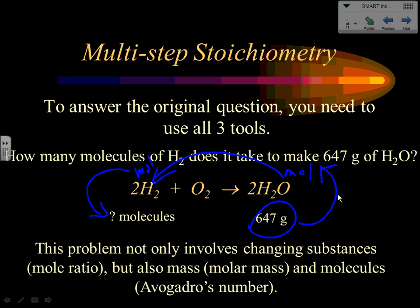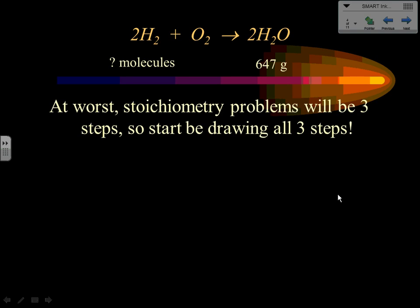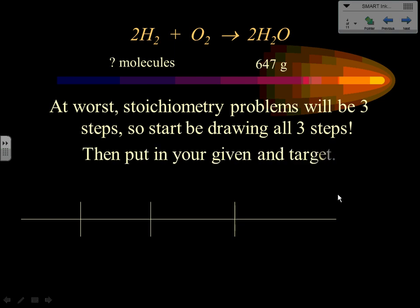Problems always involve going from moles of one thing to moles of another — that's what makes it stoichiometry. Sometimes we have to get to moles at the beginning, and sometimes we have to get out of moles at the end. Worst case is a three-step problem. To keep it simple, always set it up as a three-step problem every single time; you just may not need all the steps.